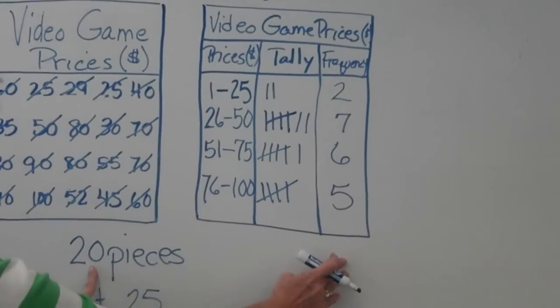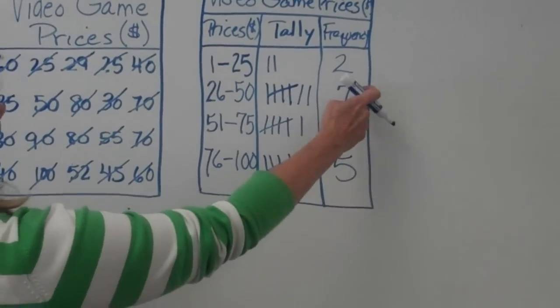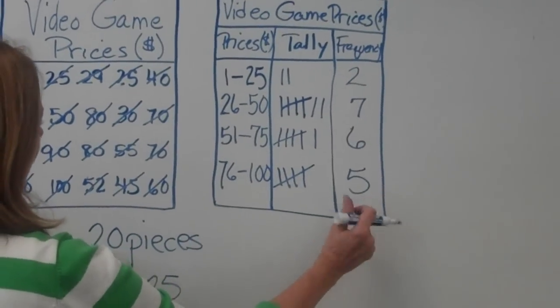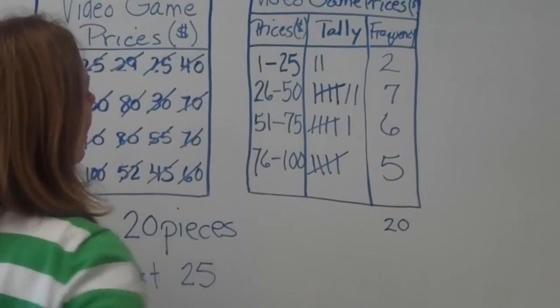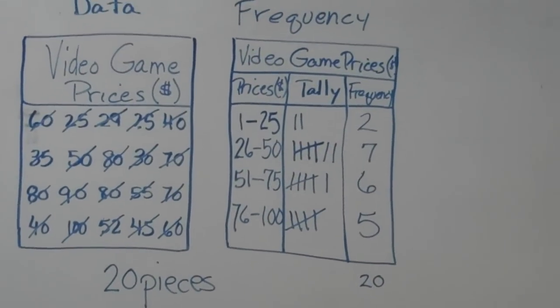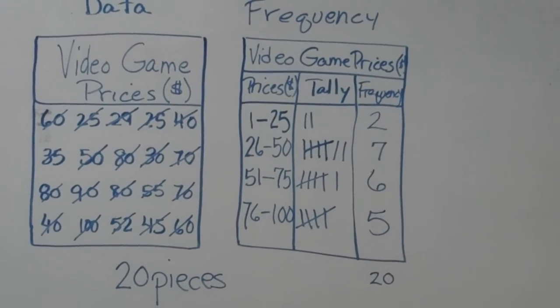You should end up with 20 pieces of data in your frequency column and that should match your 20 original pieces in your data box. 2, 7, 13, 18, and that is a total of 20. I always write that down just to verify that I have counted everything.